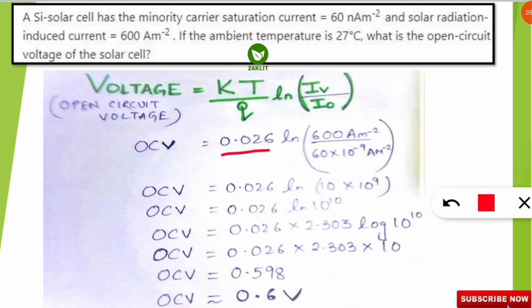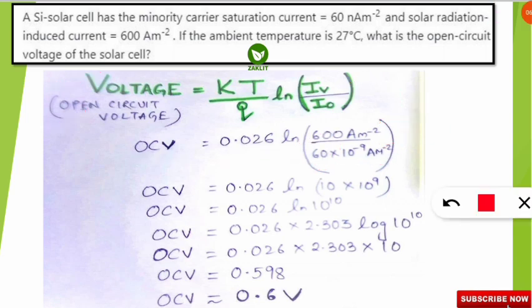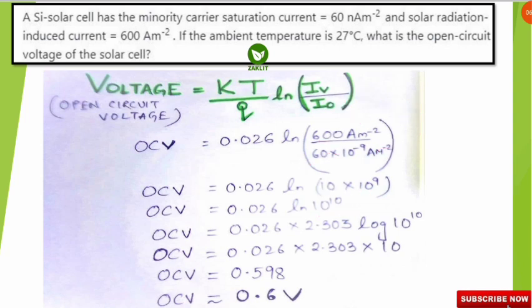So the open circuit voltage equals 0.026 × ln(I_v / I₀). I_v is 600 A/m² and I₀ is 60 × 10⁻⁹ A/m². When we divide, the 600 and 60 cancel to give 10 in the numerator, and 10⁻⁹ moves to the numerator. So we get 10 × 10⁹ = 10 to the power 10. The expression becomes 0.026 × ln(10¹⁰).